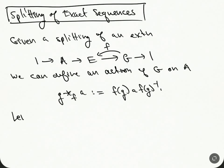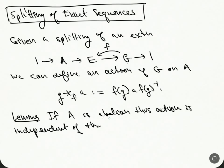So let me say a lemma: if A is abelian, this action is independent of the choice of splitting. And we've seen in other videos that you can actually construct this action without even having a splitting. Let me just prove this real quick.